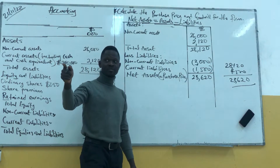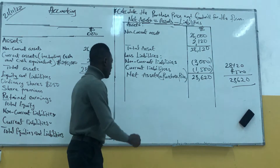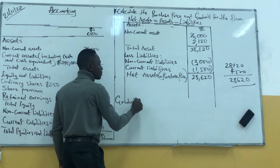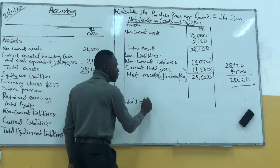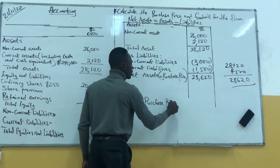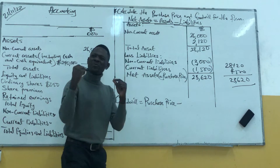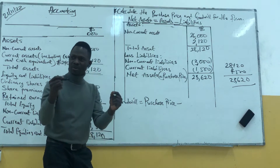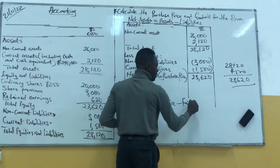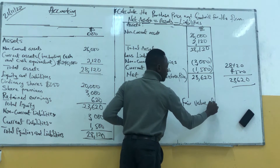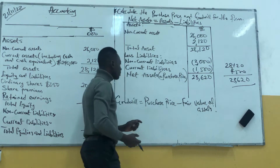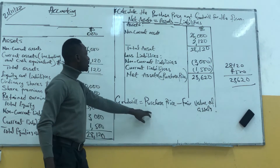What is the formula for goodwill? The formula for goodwill equals purchase price minus the fair value of the assets. So what is the purchase price?